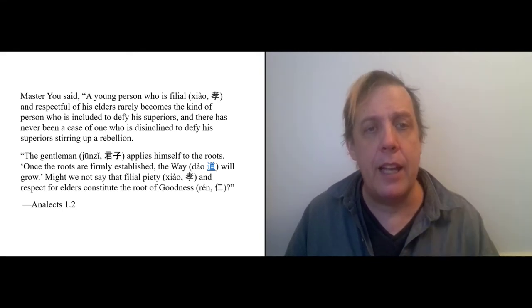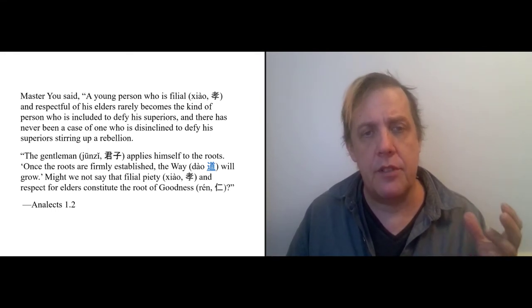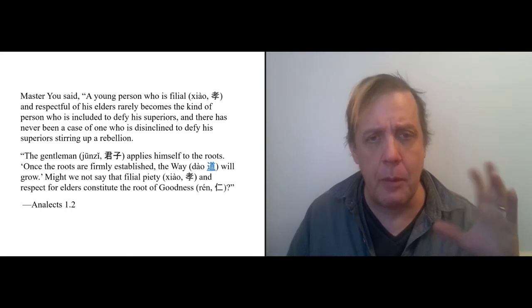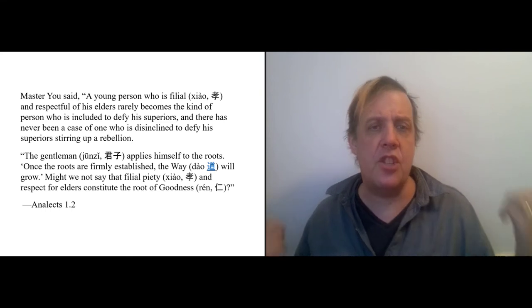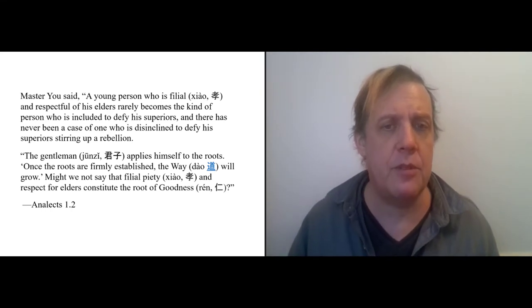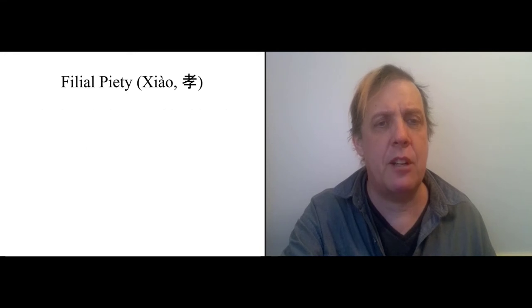So the second paragraph then moved from this observation about politics to an observation about what it means to be a gentleman. And so now we need to unpack the other terms because it's in the second paragraph that we see the relationship between four key Confucian terms. There's filial piety, gentleman, goodness and Tao. So I just talked about filial piety. Filial piety is the root of all these other things.